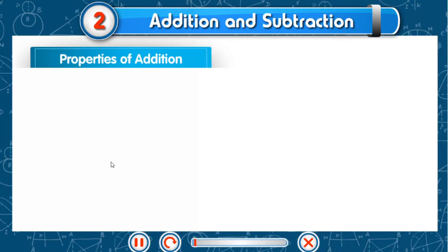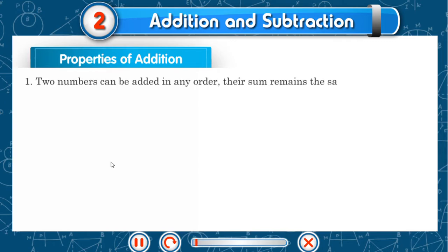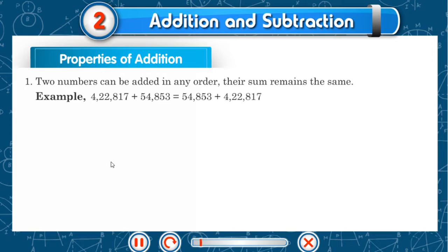Properties of addition. Two numbers can be added in any order and their sum remains the same. Example: 4,22,817 plus 5,48,053 is equal to 5,48,053 plus 4,22,817, which is 4,77,670.